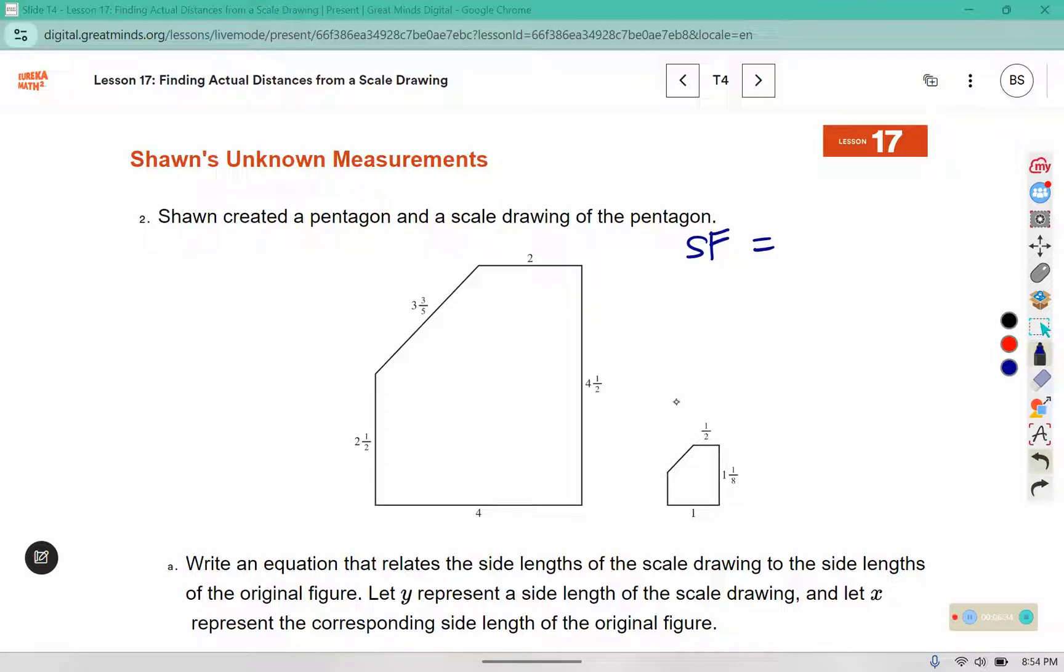The way we find the scale factor is the new divided by the original side lengths. The new has a side length of 1 and the original has a side length of 4. I chose those sides because they are corresponding side lengths, meaning they're in the same location of the picture, and they're also whole numbers so it makes it simple to work with. So we find out that 1 divided by 4 could be written as a scale factor of 1 fourth.